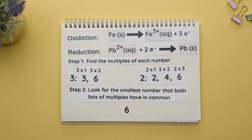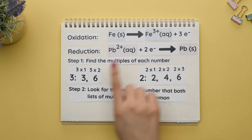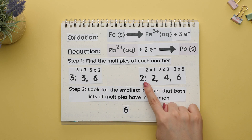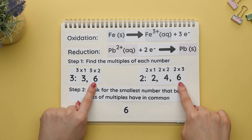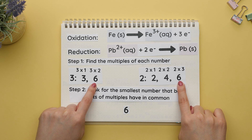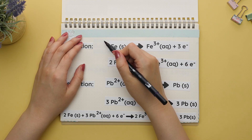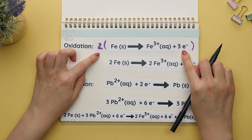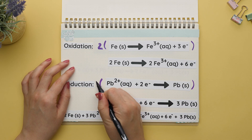Now it's time to use the least common multiple to help us balance these half reactions — we want the electrons to be the same number. Let's find the LCM using the electrons as our numbers. For three: 3, 6. For two: 2, 4, 6. Both lists have a six, so six is our least common multiple. This means we want both electrons to be six. To balance the electrons we will multiply the entire oxidation half reaction by two, because for these three electrons to become six we need to multiply by two. Same concept for the reduction half reaction — we multiply by three for these two electrons to become six.